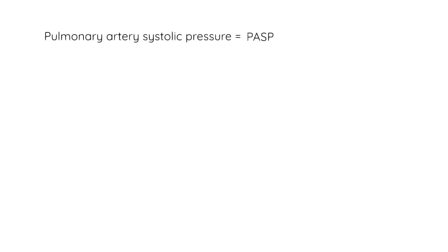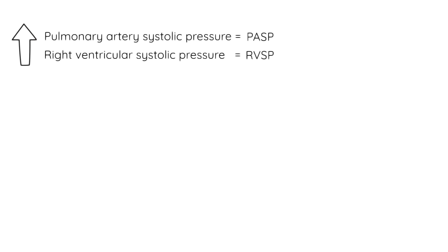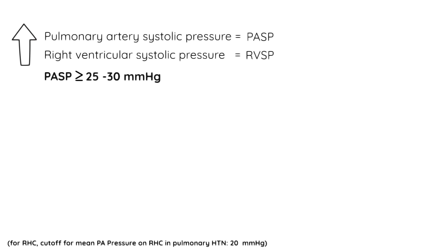So you ordered an echo and the report says that the patient's pulmonary artery systolic pressure, aka PASP, or right ventricular systolic pressure, aka RVSP, is high. What is actually considered high? Usually a PASP greater than or equal to about 25 to 30 millimeters of mercury is considered elevated. But when interpreting that number, it's important to know that the PASP and RVSP on echo are not direct measurements, but estimates.